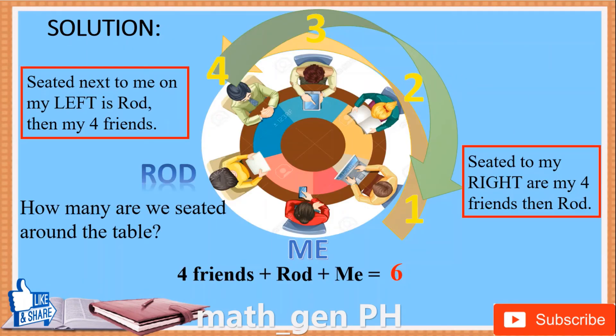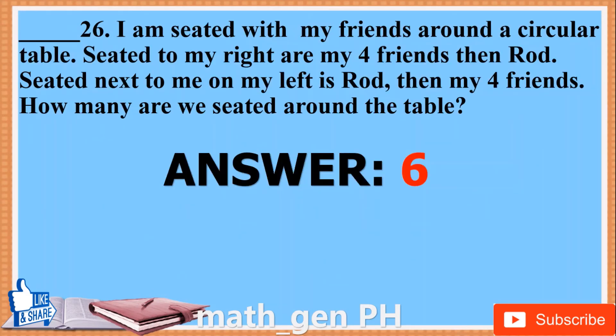Solution. Seated next to me on my left is Rod, then my 4 friends. Seated to my right are my 4 friends then Rod. My 4 friends are seated between me and Rod. So: 4 friends plus Rod plus me equals 6. Six people are seated around the table. Answer: 6.